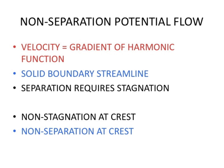An important property of potential flow is that flow separation from a solid boundary requires stagnation to zero flow velocity, because the solid boundary is a streamline. In particular, potential flow, and thus real flow, does not separate on the crest of a wing, for example, and thus generates lift by suction.